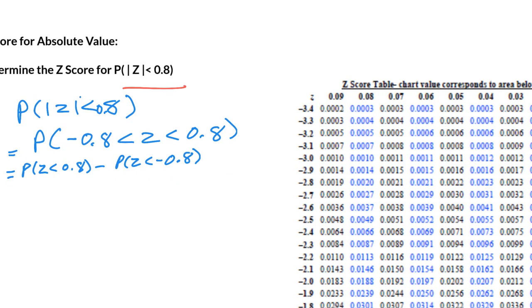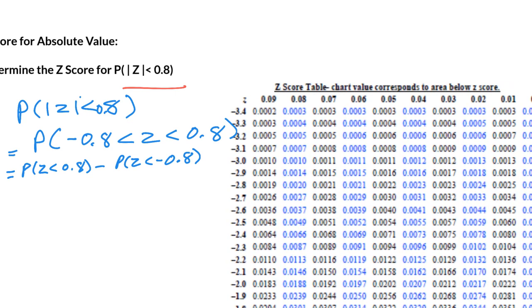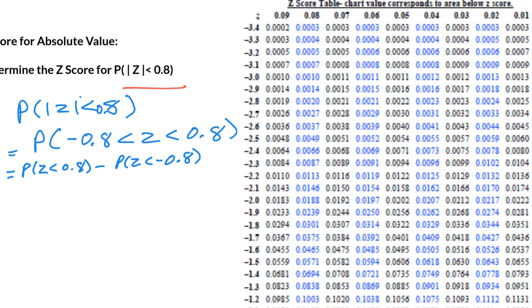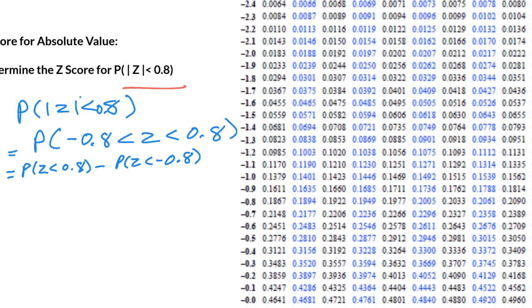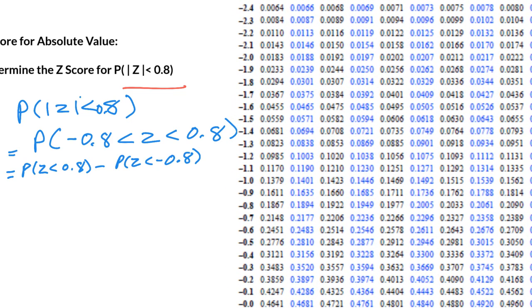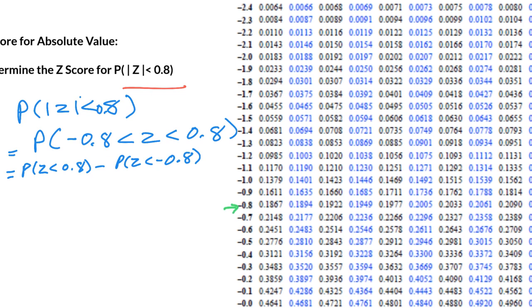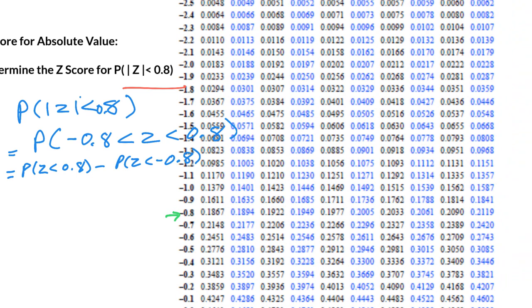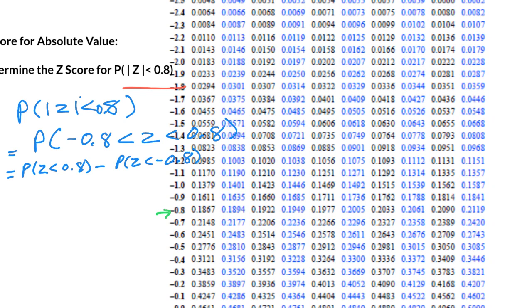So when we look at the Z score table for the negative half of the distribution, you've got negative... Here is our negative 0.8, right here. And then we have to go across all the way across to the very end. And you'll notice that your answer is this thing here, 0.2119.